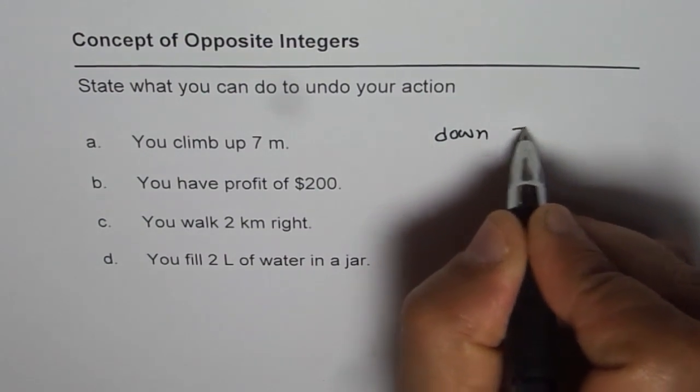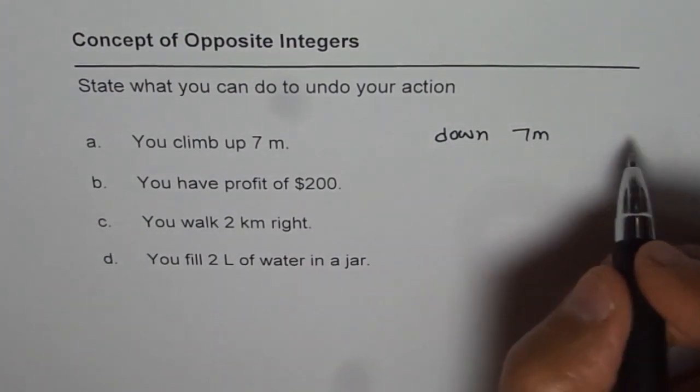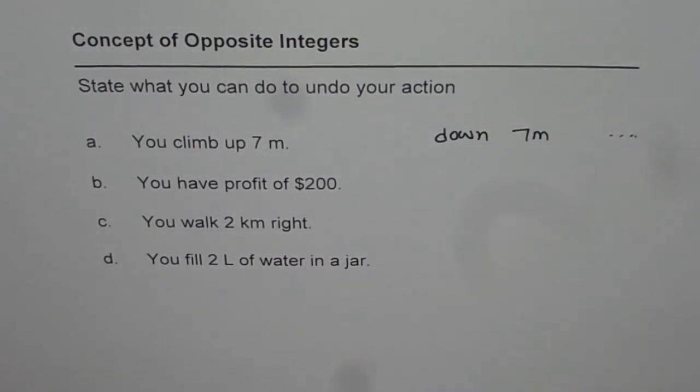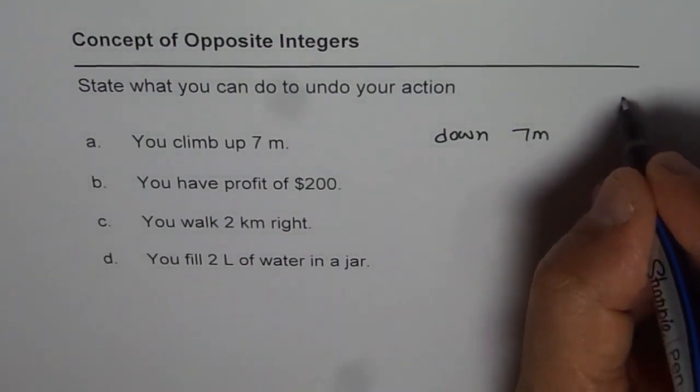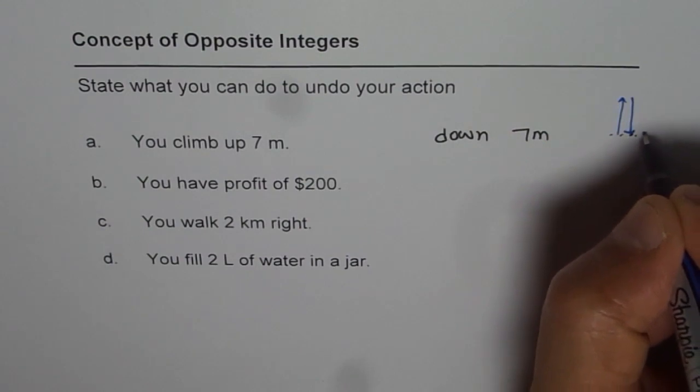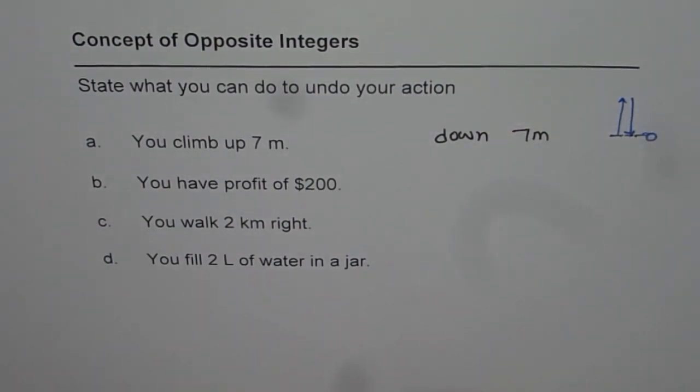You can climb down 7 meters. So when you undo, that means you come to the same position. First you climb up 7 meters and then you come down. When you do that, you are at the starting point. Let's say the starting point is 0, so you are right there at 0.